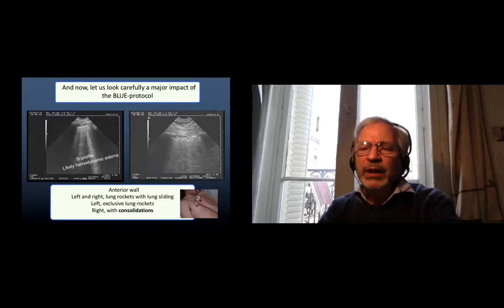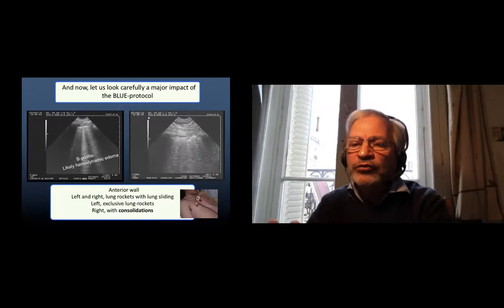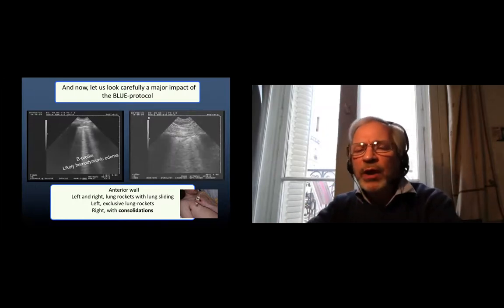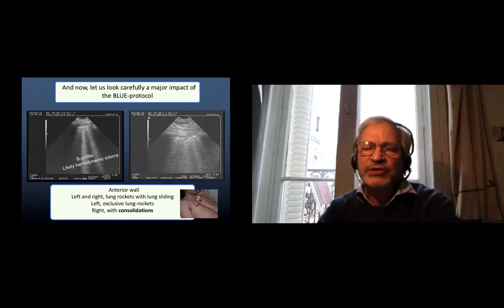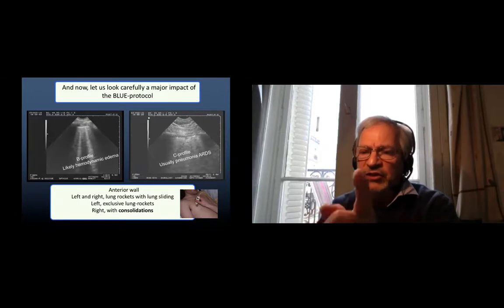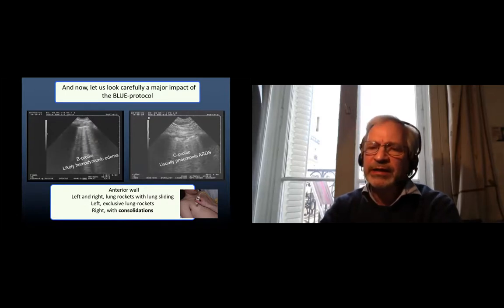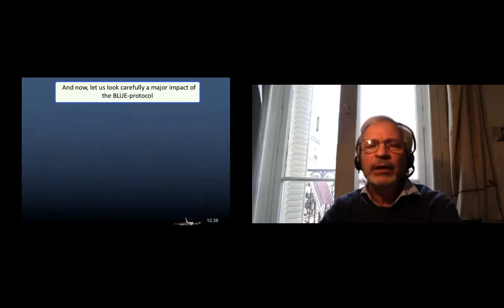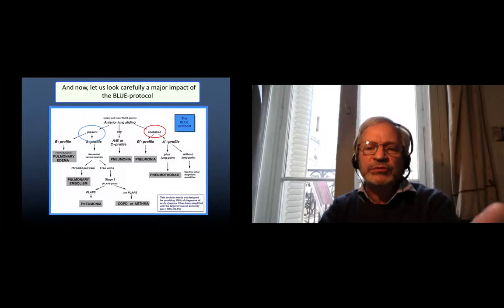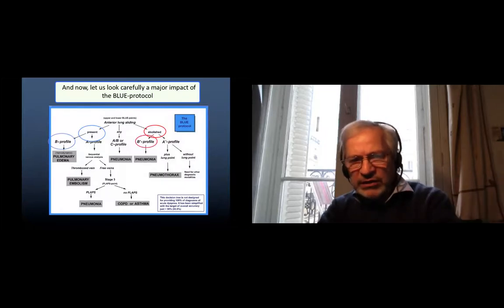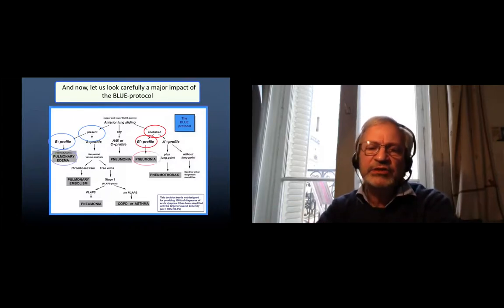If we see lung rockets with, I can see here, a trace lung consolidation, what some colleagues call the irregular second line, we call it lung consolidations. That is anteriorly the C profile. We can say this is not a hemodynamic edema, this is usually pneumonia, ARDS. We are very late so we can see that just looking by lung sliding, which is present or abolished with several B-lines, we can say B profile or B-prime profile, two different diagnoses, two different therapies.